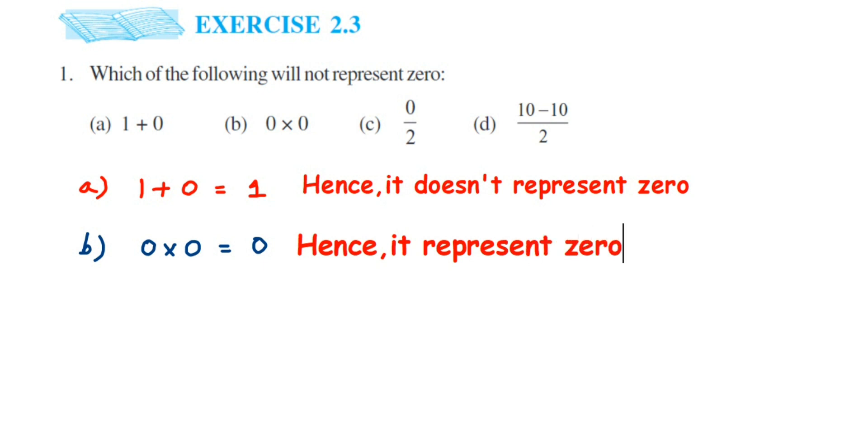Then the next one, the third problem: we have 0 ÷ 2. Whenever you divide zero by any number, you always get the answer 0. So 0 divided by 2 is equal to 0. So here also we can say that yes, it represents zero.